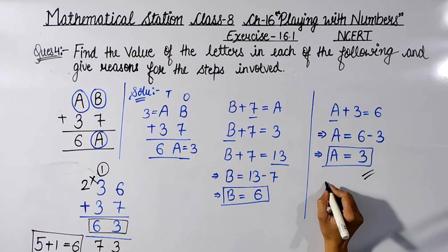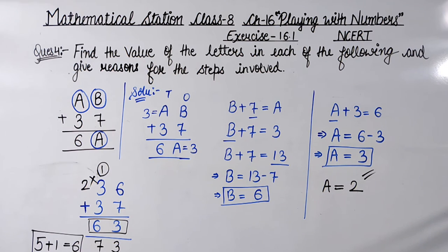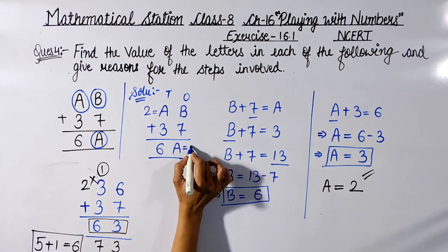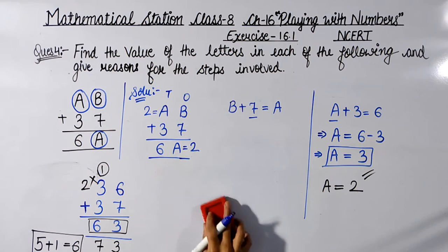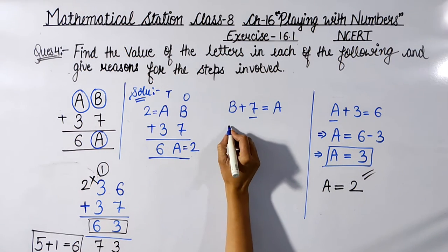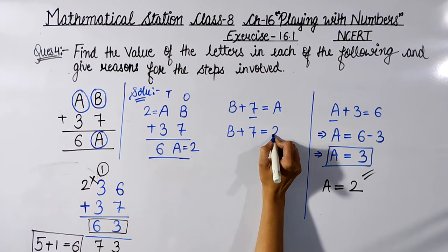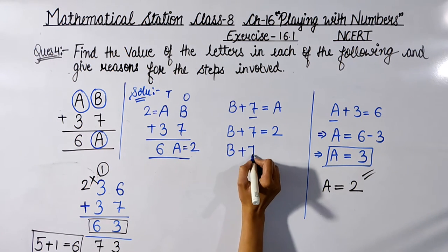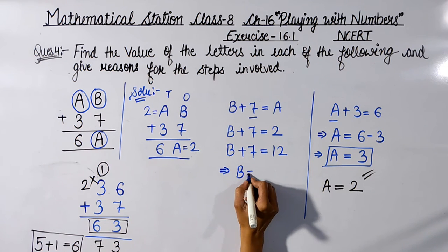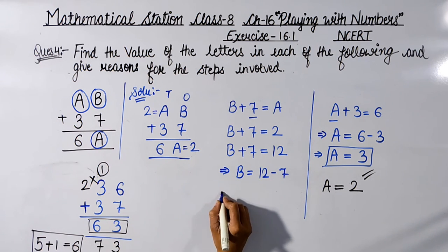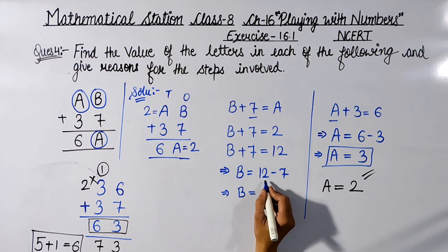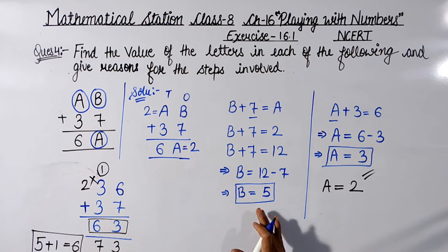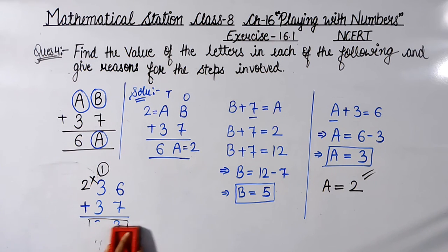So A = 2. Now substituting A = 2 into the ones column equation: B + 7 = 2. Since 7 is already greater than 2, this becomes B + 7 = 12. So B = 12 − 7 = 5. Therefore if A = 2, then B = 5. Now we will verify these values again.